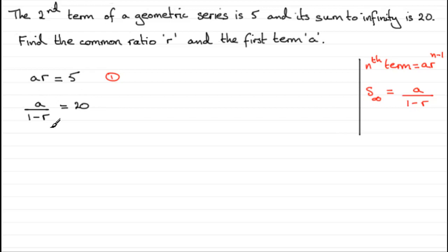Now I can develop this equation so that I can make a the subject in preparation to substitute it into here. So if I multiply both sides by 1 minus r I'm therefore going to get a equals 20 times 1 minus r. So let's number that equation 2.